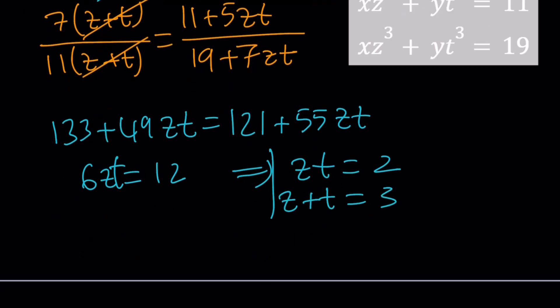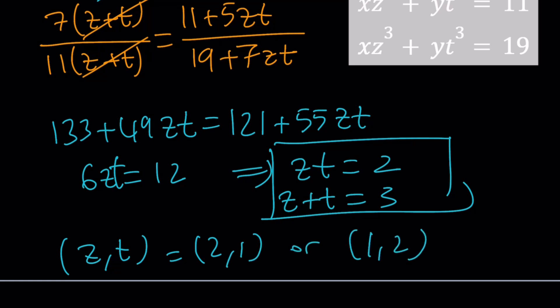That's awesome because now we've got a system and we can easily solve. So zt is 2. So think about it. We're looking for two numbers whose product is 2 and whose sum is 3. Those numbers are 2 and 1. So z comma t can be 2 comma 1 or 1 comma 2. They're interchangeable, obviously. Great.